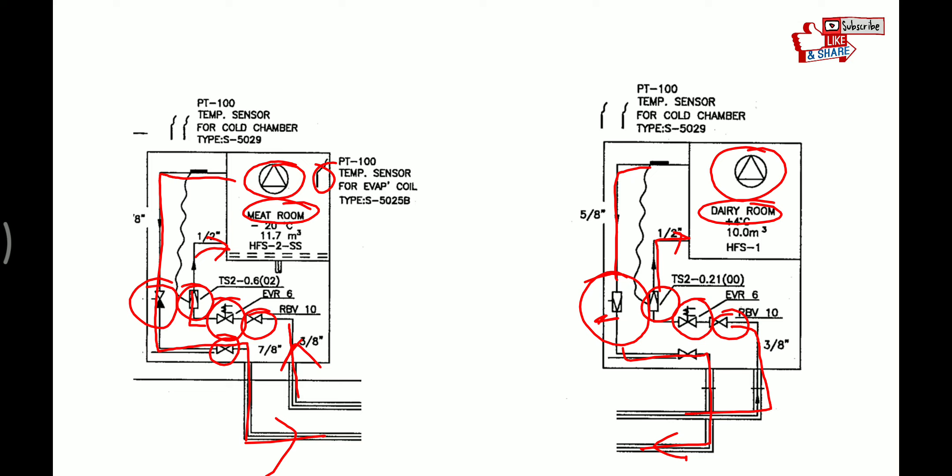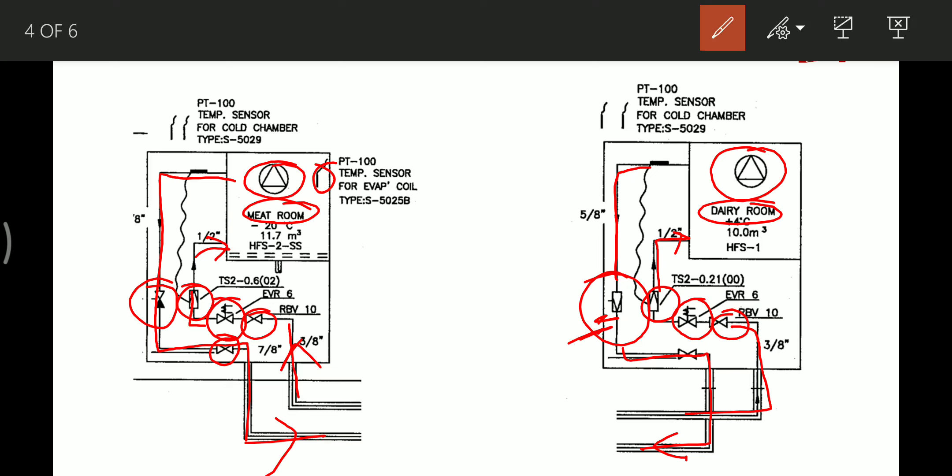I will now discuss two things in detail that make a multi-evaporator system different from a single evaporator system. The first is the back pressure valve. This back pressure valve is a spring-loaded non-return valve fitted at the exit of the refrigerant from the evaporator whose temperature is to be set higher — for example, the veg room and dairy room at 4 to 5 degrees, compared to the meat room and fish room at minus 20 degrees Celsius.